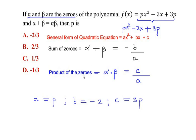Let us substitute the values of a, b, c in the sum and product of zeros. For the sum, we have -b/a = -(-2)/p = 2/p. For the product, c/a = 3p/p, and p cancels to give us 3.